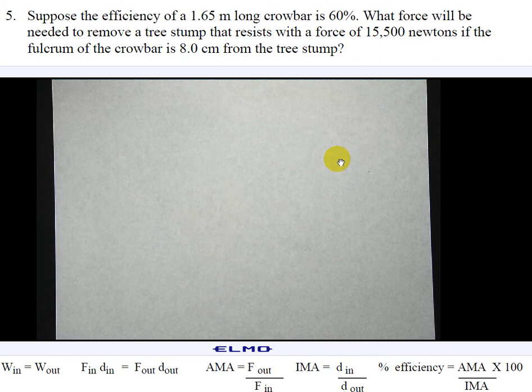Notice at the top of the screen: suppose the efficiency of a 1.65 meter long crowbar is 60 percent. What force will be needed to remove a tree stump that resists with a force of 15,500 newtons if the fulcrum of the crowbar is 8 centimeters from the tree stump?